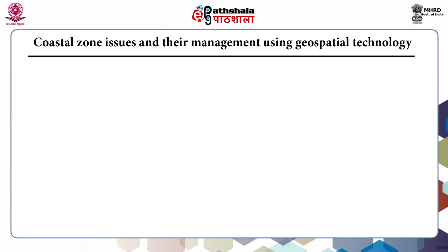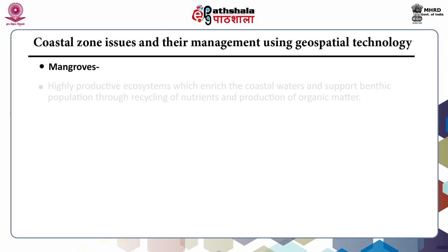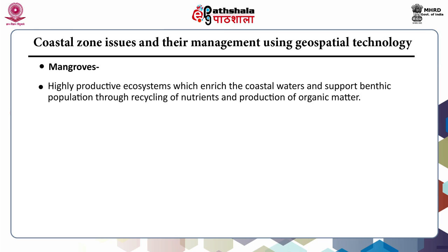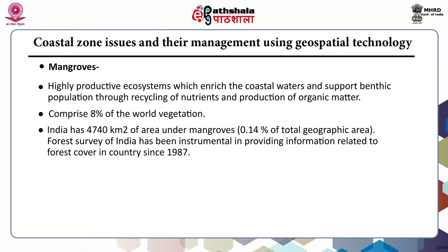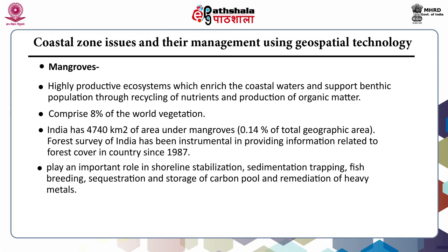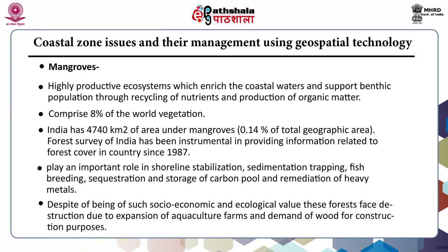Coastal zone issues and their management using geospatial technology — the first one is mangroves. Mangroves are known to be highly productive ecosystems. They enrich the coastal waters and support the benthic population through recycling of nutrients and production of organic matter. These comprise 8% of world vegetation. India has around 4,740 square kilometers area under mangroves, which is around 0.14% of the total geographic area. Forest Survey of India has been instrumental in providing information related to forest cover in the country since 1987. Mangroves play an important role in shoreline stabilization, sedimentation trapping, fish breeding, carbon sequestration and storage, and remediation of heavy metals.